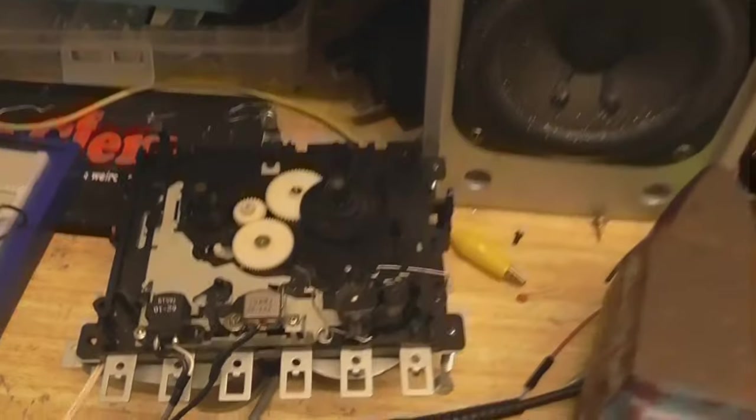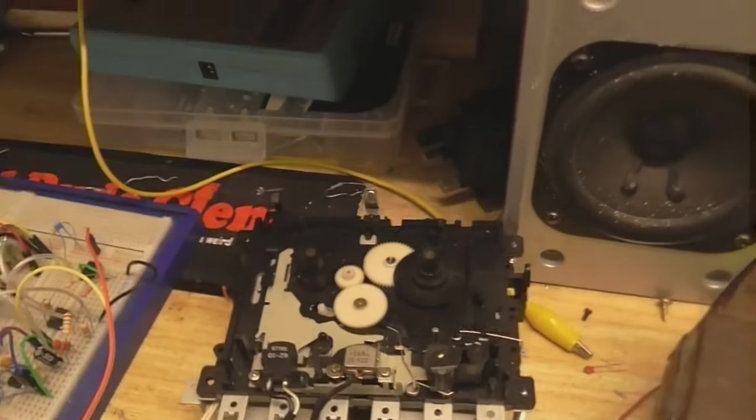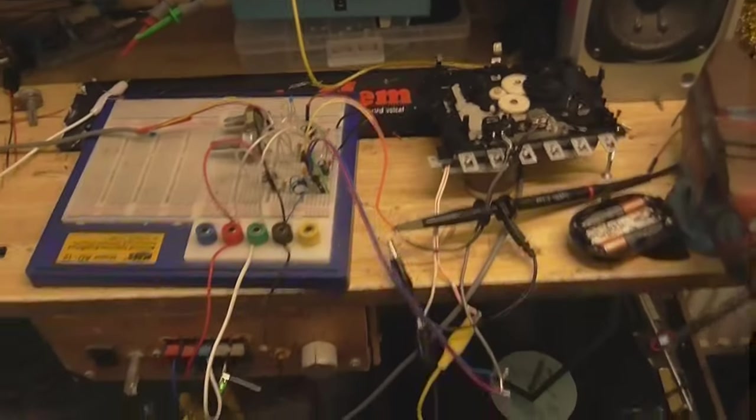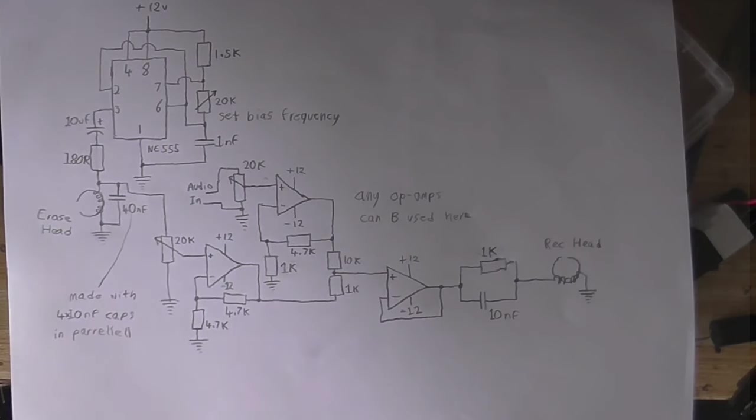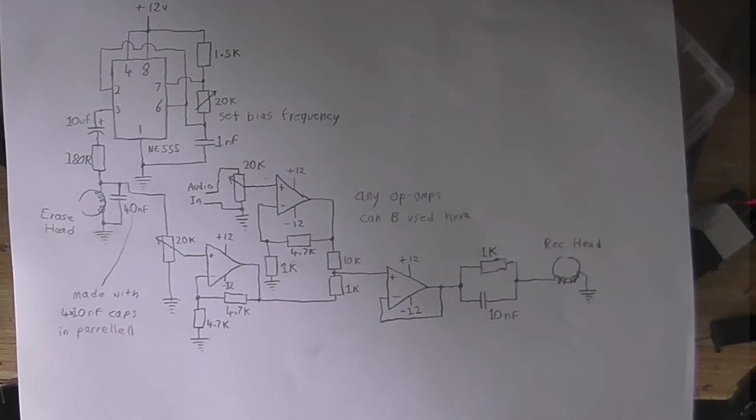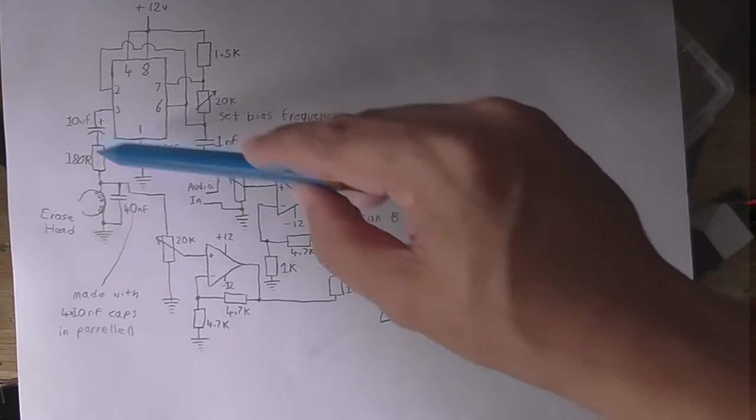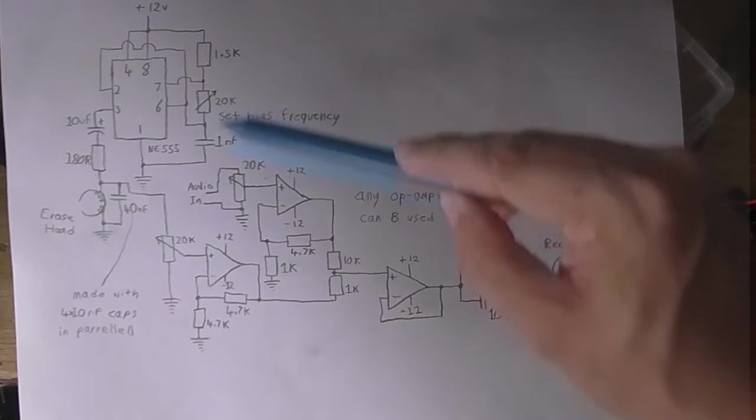So you can hear, it actually sounds pretty good now. So, let's have a look at the circuit. Take 400,000 million trying to explain this circuit. Because every time I start the camera rolling, my mind just goes. So this is the circuit, if you want to have a look at it, and of course you're free to copy it if you wish. It's not perfect, by any stretch of the imagination. But, it is what it is. So I'll just give you a little talk through of it. So, we've got our 555 timer here, which is the bias oscillator.